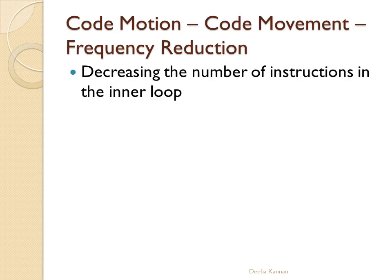The first technique is code motion, also called code movement or frequency reduction. This means we reduce the number of instructions inside the loop by moving some statements that are inside the loop to outside the loop. When an instruction is present inside the loop, it repeats for n iterations. But if the result is not used or disturbed inside the loop, we can move that statement outside so it executes only once.